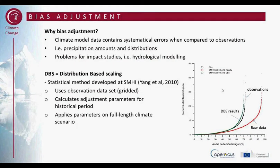So why bias adjustment? Climate model data contains systematic errors when comparing to observations. For example, it could be precipitation amounts and distributions, and this could be a problem for impact studies, for example, hydrological modeling. And this is explained in the figure you see in the diagram below.